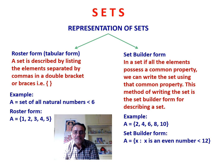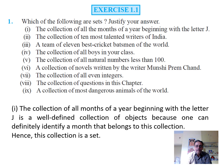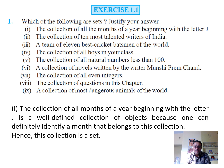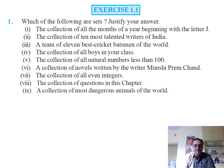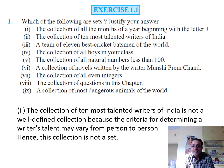Now let us solve the first exercise: which of the following are sets? The collection of all months of a year beginning with the letter J is a set, because we can clearly identify months starting with J. The collection of the 10 most talented writers of India is not a set, because the criteria for 'talented' is not fixed and varies from person to person.